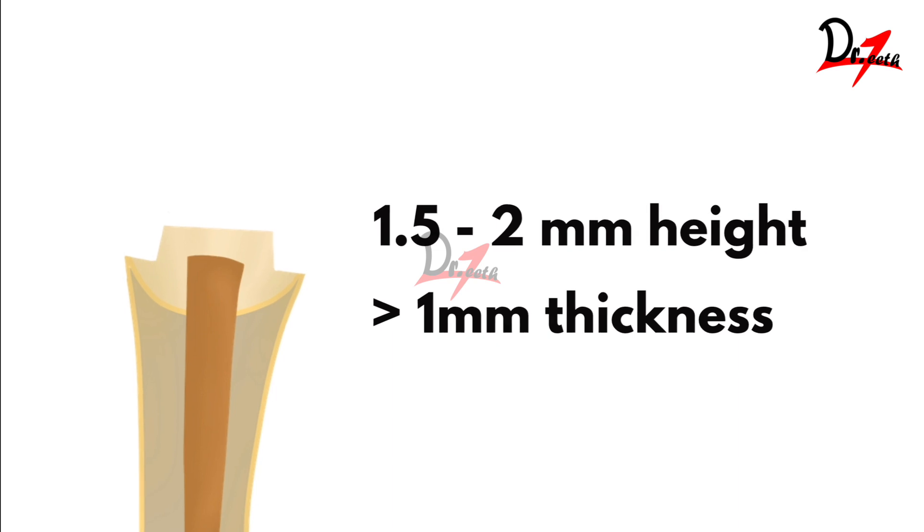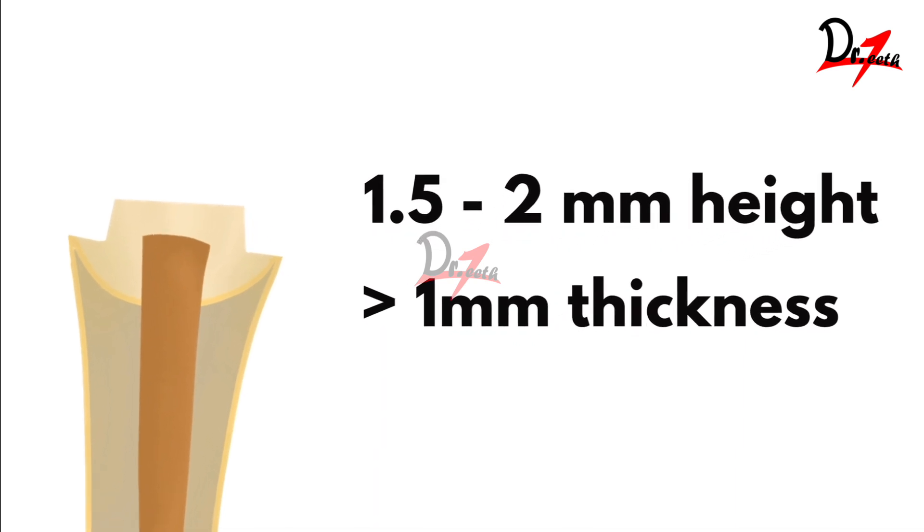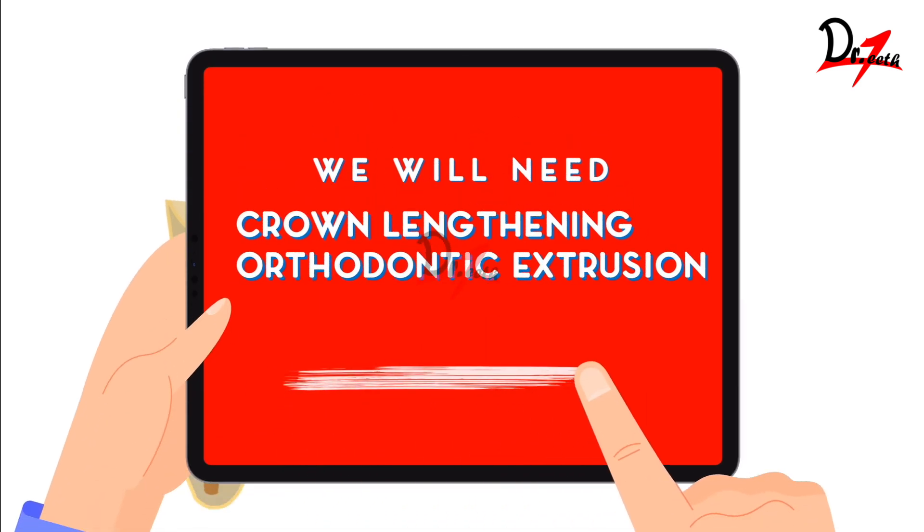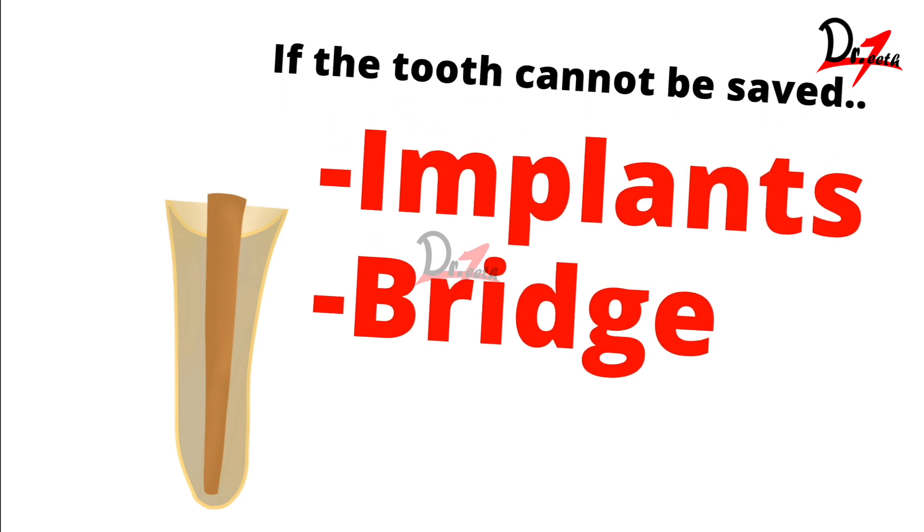In certain cases, if tooth structure is missing on some portions — say the mesial or distal aspect — we can still restore without full 360-degree ferrule, but terms and conditions apply. To summarize: the ferrule must be 1.5 to 2 mm in height, more than 1 mm in thickness, and preferably encircle the tooth 360 degrees. If the tooth does not have this minimum ferrule height and width, it cannot be restored and will require extraction. Alternatives include crown lengthening or orthodontic extrusion before proceeding.